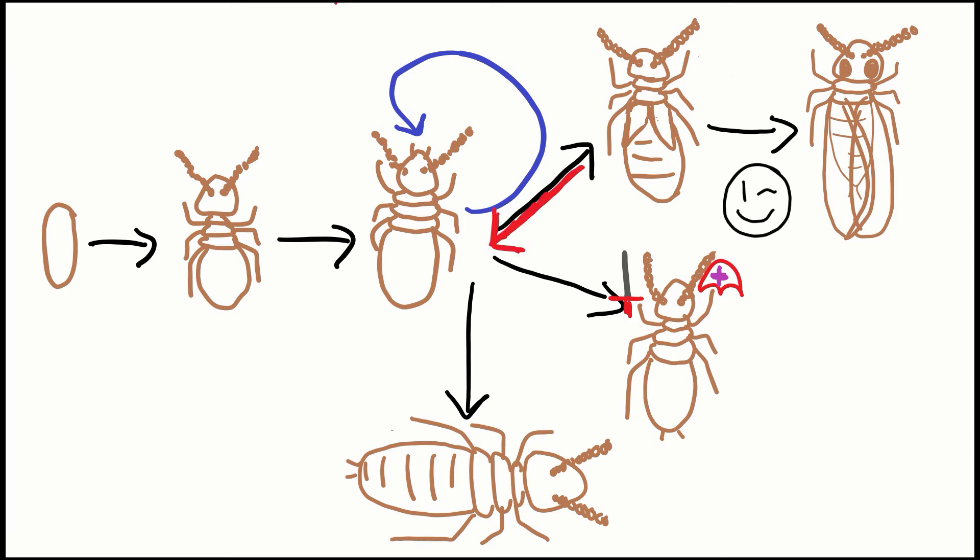Or, the termite can molt regressively and molt back into an immature without wing buds. This would mean the immature is back to cleaning, feeding, and colonial care. This ability to regressively molt is an incredible feat in the insect world. Although, I bet the termites don't think so. They get put back on cleaning duty.